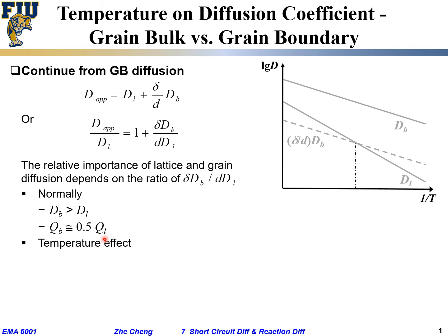We are plotting log D (diffusion coefficient, log base 10) versus inverse temperature. Based on the typical Arrhenius equation, we get straight-line plots. On this plot, the left side is higher temperature — a smaller 1/T means higher temperature — while a larger 1/T on the right means lower temperature.